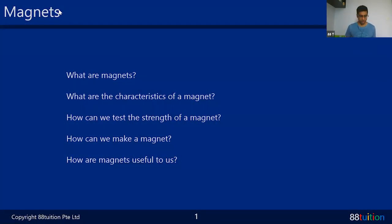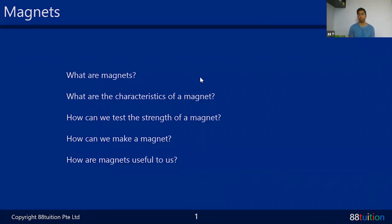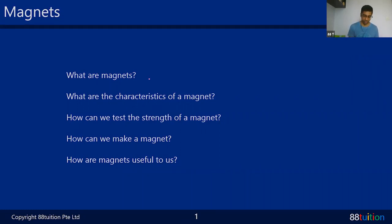Okay, now you can see - what are magnets, what are the characteristics of magnets, how can we test the strength of the magnet. The last two parts we may not have time for today, so I've actually broken magnets into two sessions. Maybe next week we'll look at how to make magnets. This week we look at the first three points: what are magnets, what are the characteristics of magnets, and how can we test the strength of the magnet.